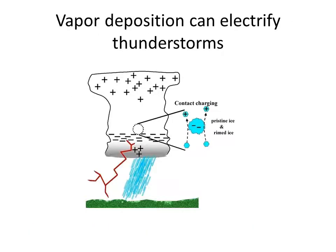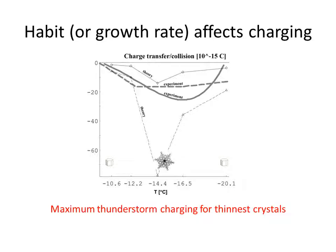Ice crystal habit is also crucial for making lightning possible in thunderstorms. Small, light, vapor-grown crystals are carried upward and ricochet off the heavier rime particles falling down, exchanging charge in the process — an electrification similar to a Van de Graaff generator. The charging depends on growth rate, which is closely related to crystal habit. Charge exchange per collision peaks near minus 14 or minus 15 degrees, where growth rate is fastest. This is also where the crystal habit is thinnest. Where growth is slower and crystals are isometric, the charging is almost zero.